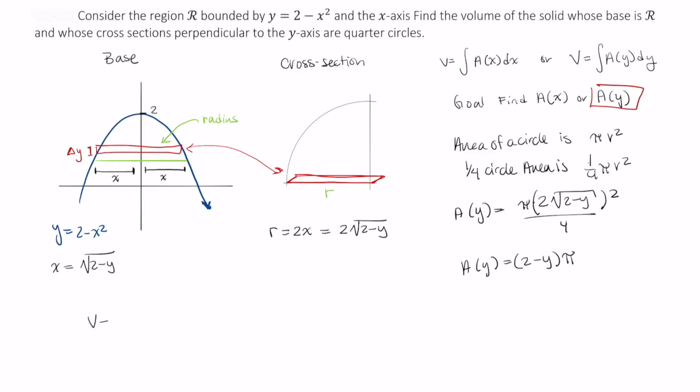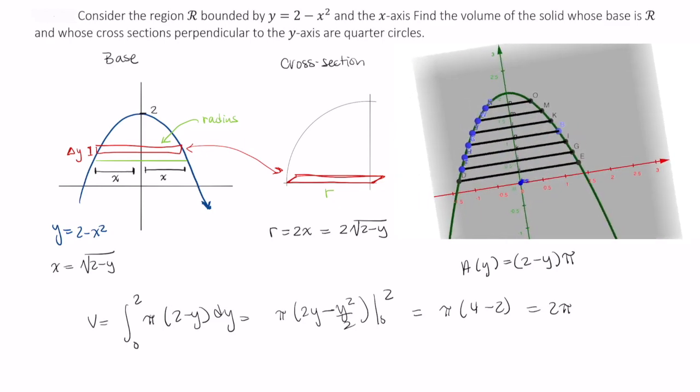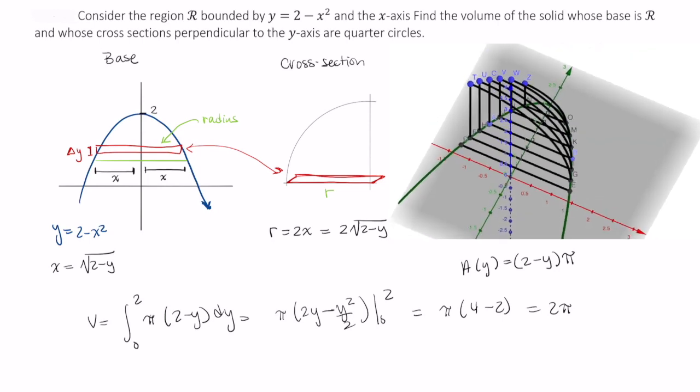Now I can compute the volume of this region with respect to y, and y goes from starting at 0 all the way up to 2. So the smallest y value is at 0, the largest y value is at 2. Integrating, we end up with pi times 2y minus y squared over 2 from 0 to 2. This gives us pi times 4 minus 2, which is just 2 pi. So the volume of this solid, as pictured on the right here, you can see it moving, is equal to 2 pi.